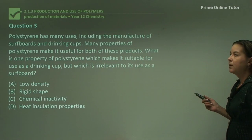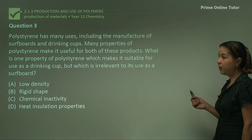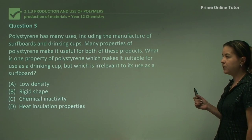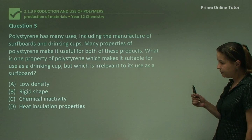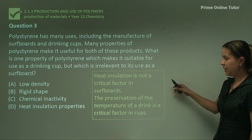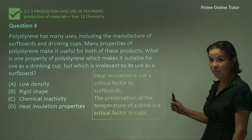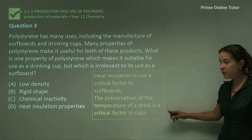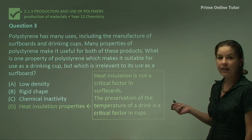Question three: polystyrene has many uses, including the manufacture of surfboards and drinking cups. What is one property of polystyrene which makes it suitable for use as a drinking cup, but which is irrelevant to its use as a surfboard? Heat insulation is not a critical factor in surfboards — they're not trying to warm their drinks on surfboards. The preservation of the temperature of a drink is a critical factor in cups, so the answer is the heat insulation properties.